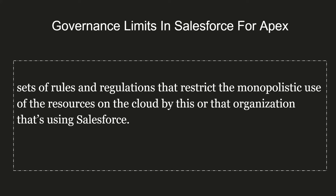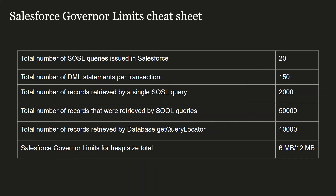Here is a Salesforce governor limits cheat sheet. In a single transaction: total SOQL queries allowed is 20; total DML statements (insert, delete, etc.) is 150; records retrieved by a single SOQL query is 2,000; total records retrieved by SOQL is 50,000; records retrieved by Database.getQueryLocator is 10,000. Heap size limits are 6 MB or 12 MB depending on your Salesforce org edition.